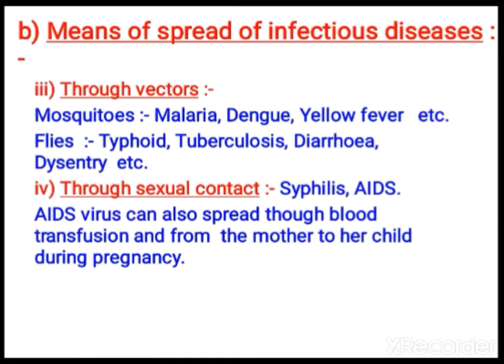Flies always sit in dirty places, and if they come and sit on your food, you can get infections such as typhoid, tuberculosis, diarrhea, food poisoning, and dysentery. That is why you should always close your food and not leave it open, as it will be exposed to house flies. You can see more house flies during rainy season.